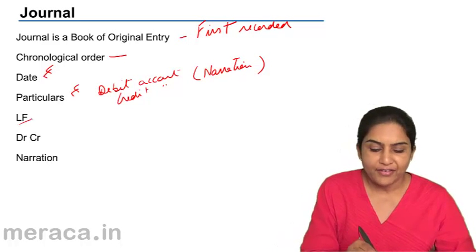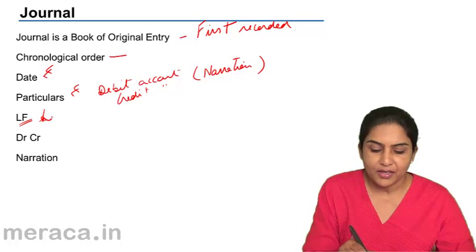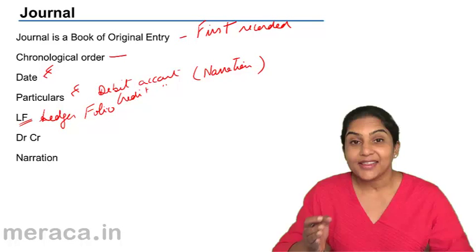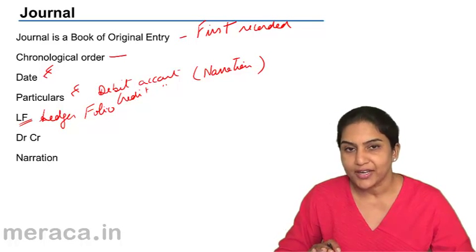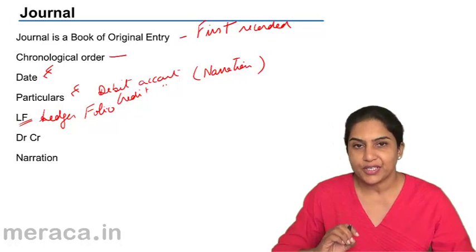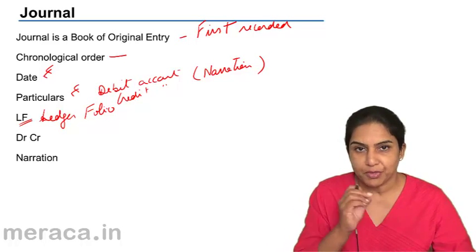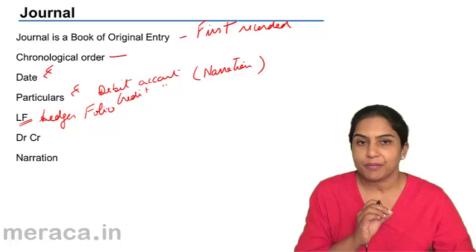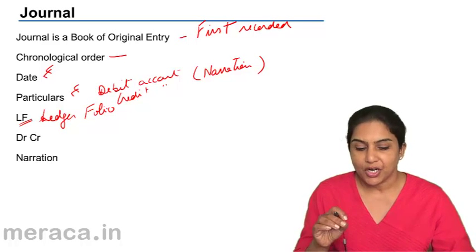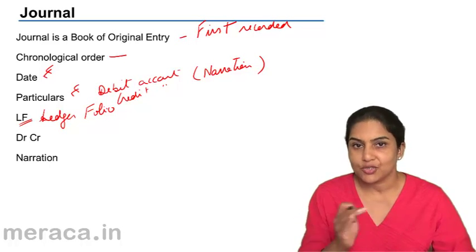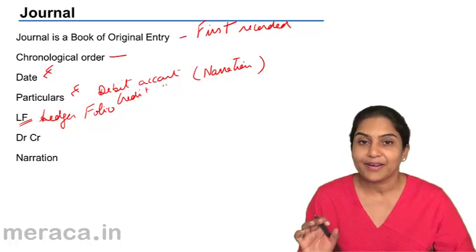We also have something called the ledger folio. The transactions, once entered in the journal, are then classified in the ledger. Ledger folio is the reference of that page number. Folio is the page number of the particular ledger account to which this transaction is going to be posted or linked.